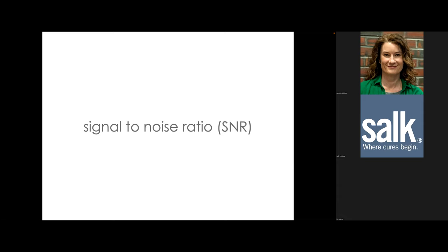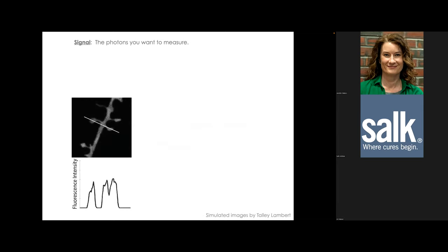Signal-to-noise ratio is extremely important. Signal is defined as the photons you want to measure. For example, if you're measuring microtubule intensity in a GFP-tubulin cell, signal is the photons emitted by fluorophores on polymerized microtubules. A line scan across the simulated image shows fluorescence intensity going up and down, with black background where there's no signal.